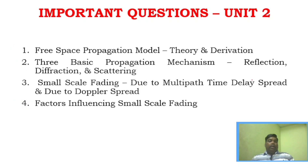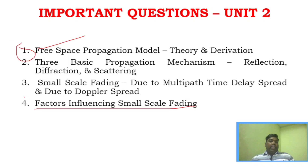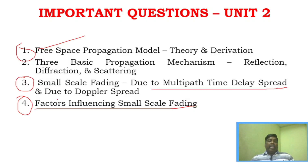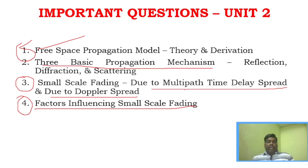For Unit 2, the free space propagation model is a very important question — you need to learn it to cover 90% of the question paper. Also important are: small scale fading due to multipath time delay spread and Doppler spread, what are the factors influencing small scale fading, and the three basic propagation mechanisms — reflection, diffraction, and scattering.